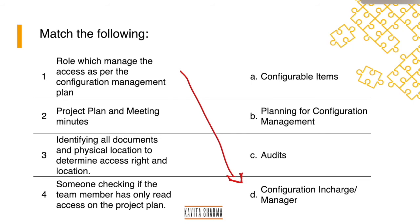So it goes to configuration in charge or configuration manager. Project plan and meeting minutes, what are these? These are configurable items. Identifying all documents and physical location to determine right access and location, what is it called? It falls under planning for configuration management.